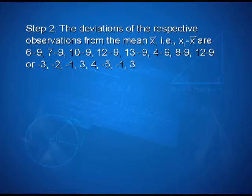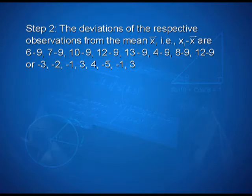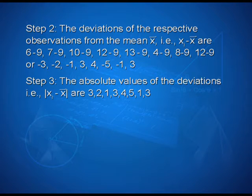In the next step, we calculate the deviations of the respective observations from the mean x̄. That is, xi minus x̄ are: 6−9, 7−9, 10−9, 12−9, 13−9, 4−9, 8−9, and 12−9, giving −3, −2, 1, 3, 4, −5, −1, 3. In step 3, the absolute values of the deviations |xi − x̄| are 3, 2, 1, 3, 4, 5, 1, 3.